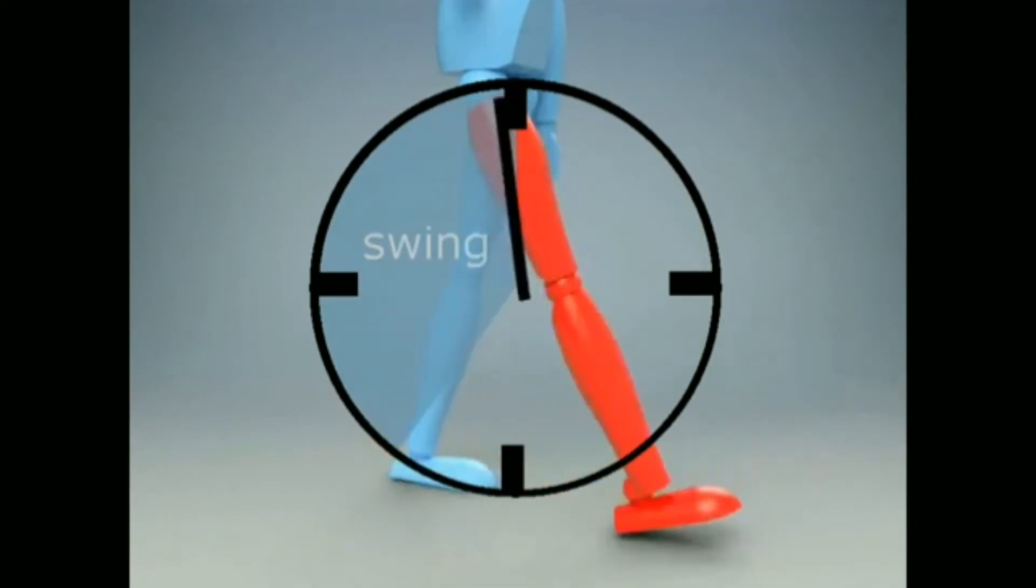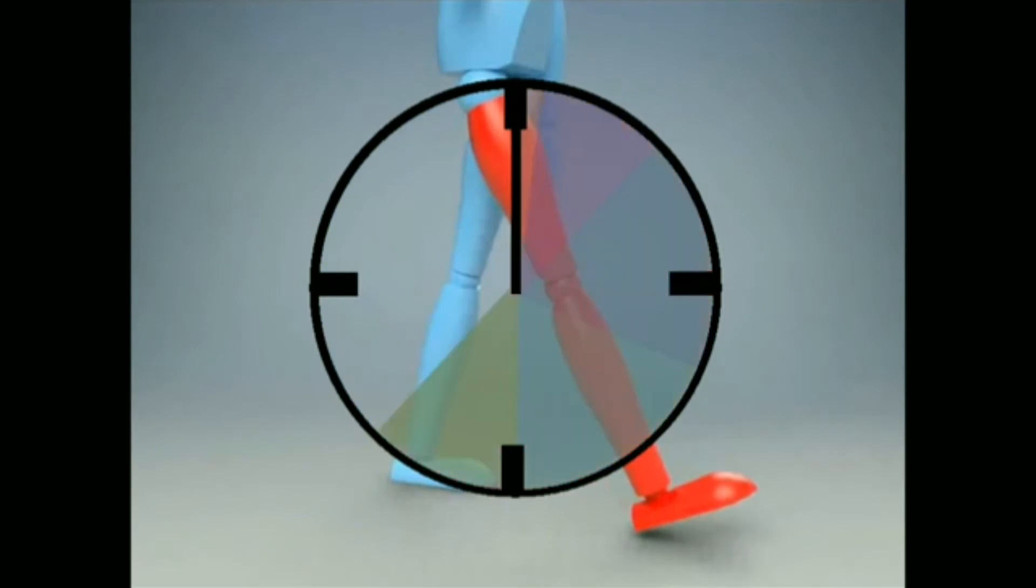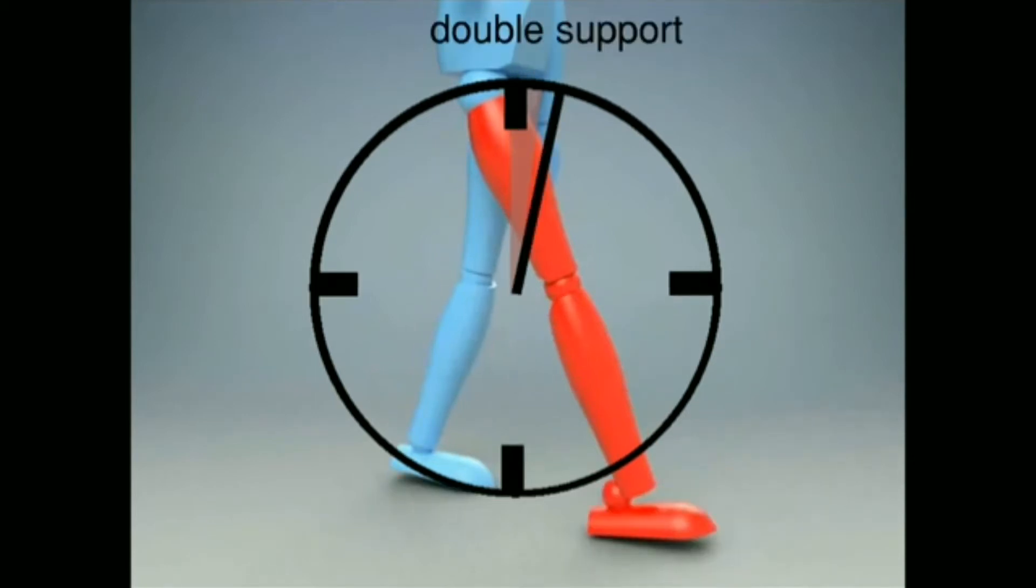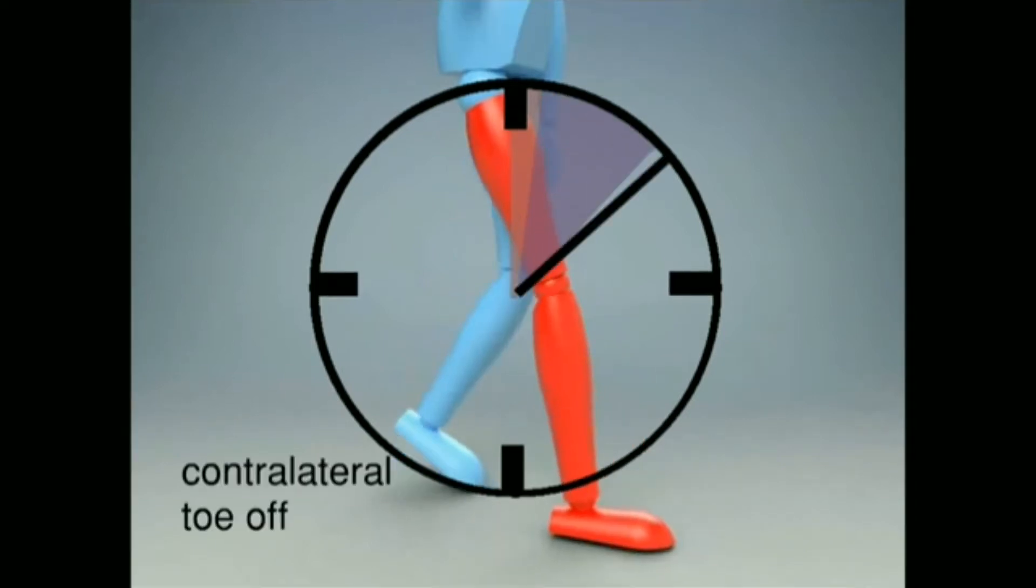Stance can be further separated into phases. Initial contact is the first two percent of the gait cycle until we reach double support, when both limbs are supporting the body weight. Next is the loading response, which covers 10 percent of the cycle until the point of contralateral toe off, when the other leg is no longer on the ground.